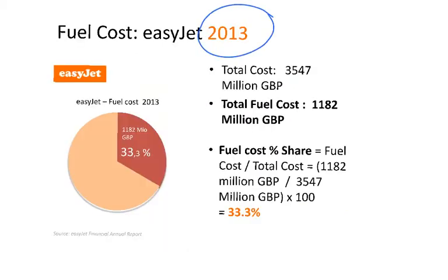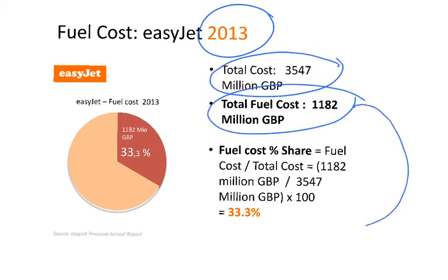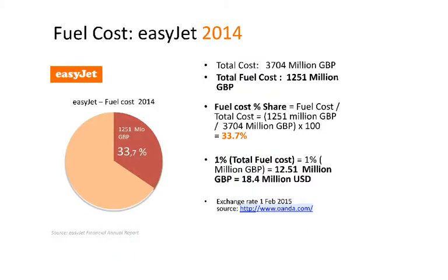Here we look at 2013, and I invite you to do something similar with your own airline or another airline: take the total cost of the airline and the total fuel cost, and calculate the fuel cost as a percentage. In this case we are again at the same level of 33.3%. Doing the same exercise for 2014 — total cost of the airline, total fuel cost, dividing both and expressing as a percentage — gives 33.7%.